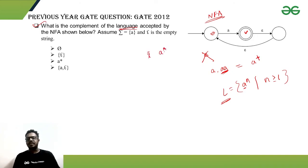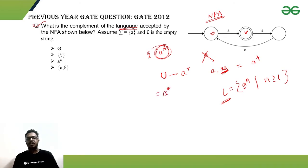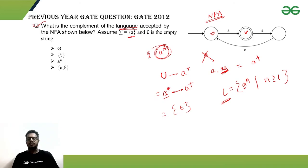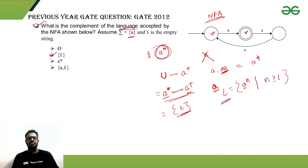The complement of a⁺ is found by subtracting from the universal language. Since the alphabet has only one symbol 'a', the universal language is a*. Therefore a* minus a⁺ equals just the null string, because a* includes the empty string while a⁺ does not. So the complement is {null}, and option two is correct.